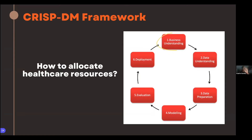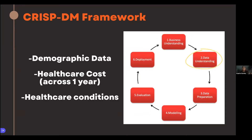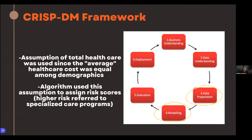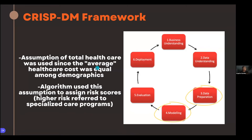The business question was how to allocate healthcare resources — that sounds like a question with good intent. They gathered demographic data, healthcare costs across one year, and healthcare conditions such as stroke and diabetes. The assumption was that total healthcare cost was equal among demographics — basically, the average cost for a Black person receiving healthcare is the same as a white person. The algorithm used this assumption and assigned risk scores: the higher your risk score, the more likely you were referred to a specialized care program.